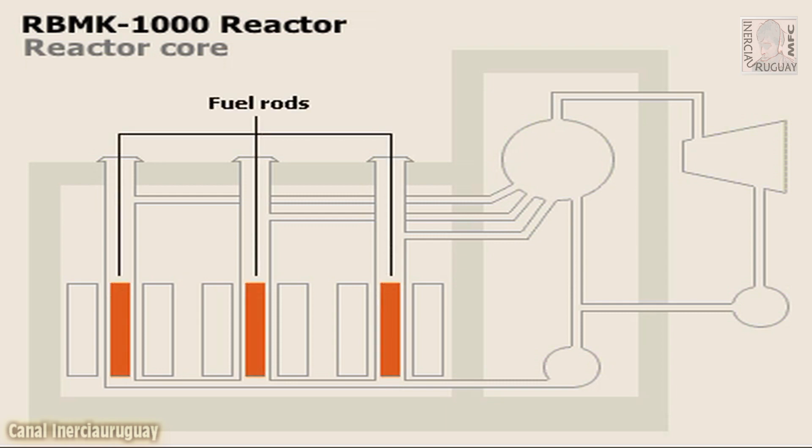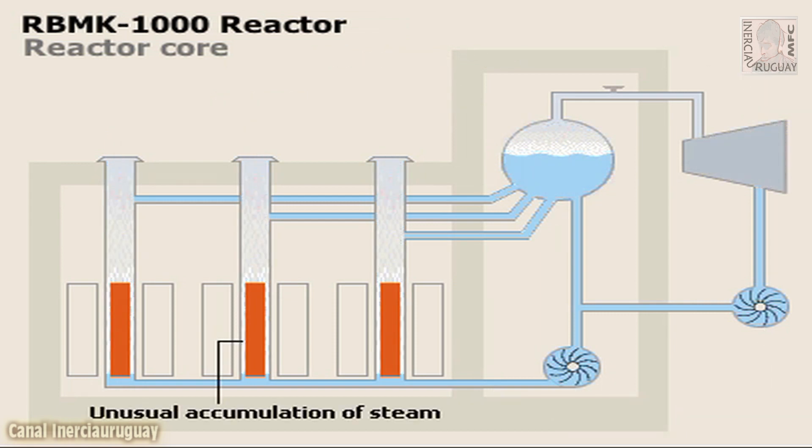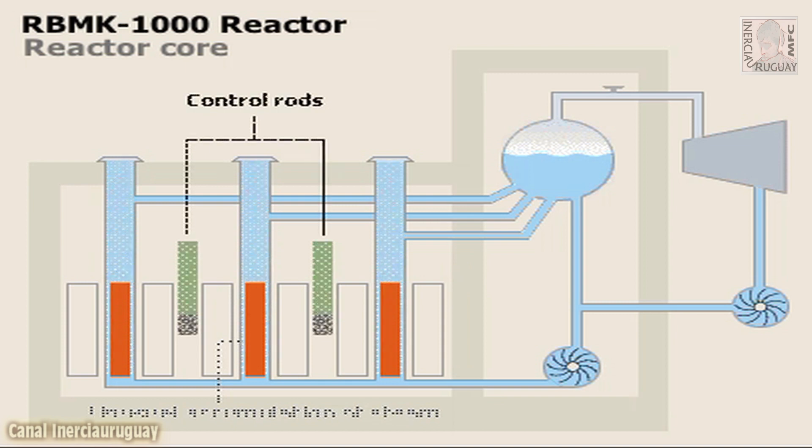In the reactor core, uranium fuel rods produced a self-sustaining fission reaction that could create up to 3,200 megawatts of thermal energy. Heat in the core turned water from the cooling system to steam, which powered the turbines. An unusual accumulation of steam around the fuel rods could quickly increase the nuclear reaction to dangerously high levels.